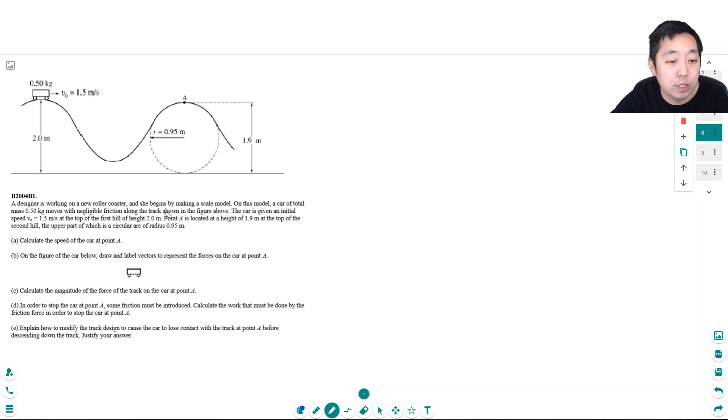The designer is working on a new roller coaster and she begins by making a scale model. On this model, a car of total mass 0.5 kilograms moves with negligible friction along the track as shown in the figure above. The car is given an initial speed v0 of 1.5 meters per second at the top of the first hill at 2 meters.